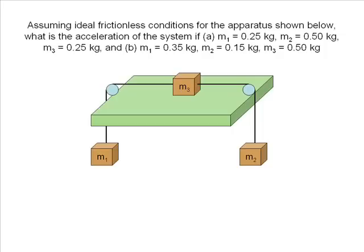In this problem, we are trying to find the acceleration of the system that includes three masses. Two of the masses are attached to a third mass and hang over a frictionless pulley. The force of gravity acting on these masses will cause the system to accelerate.